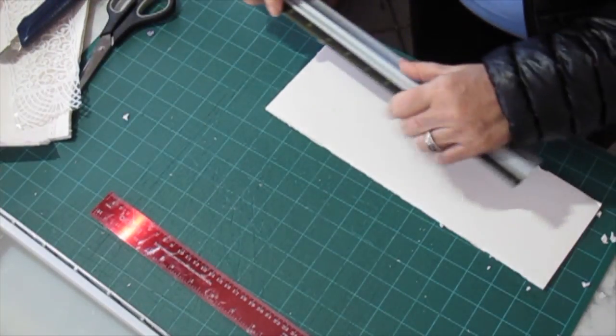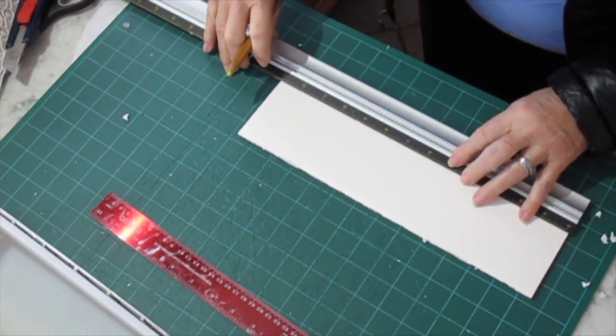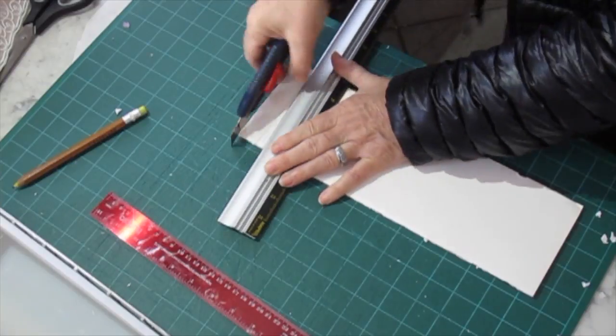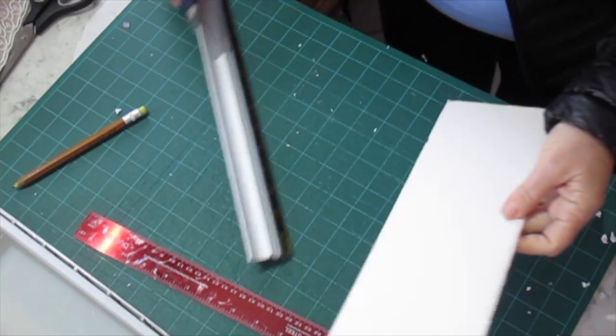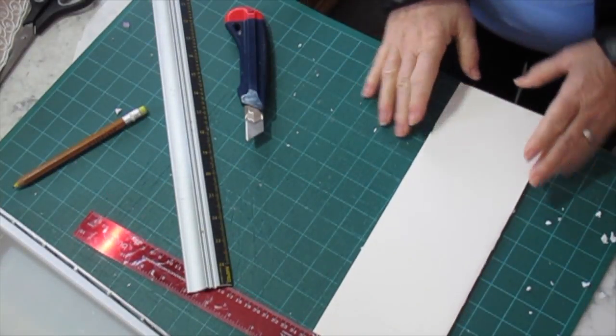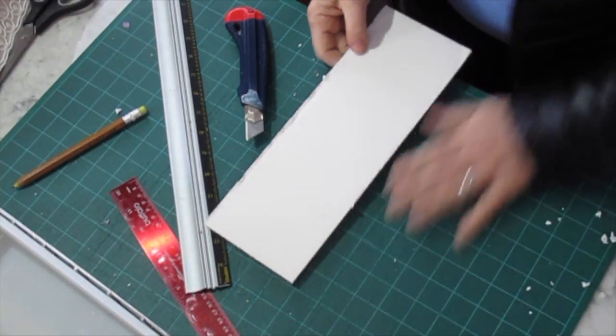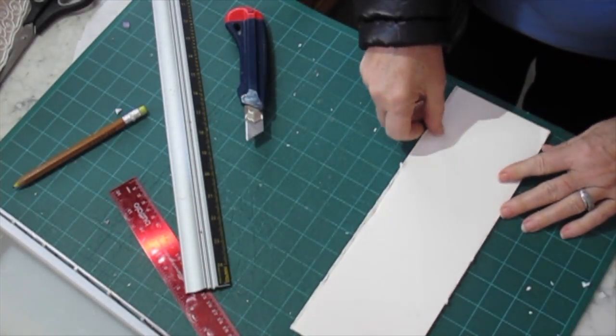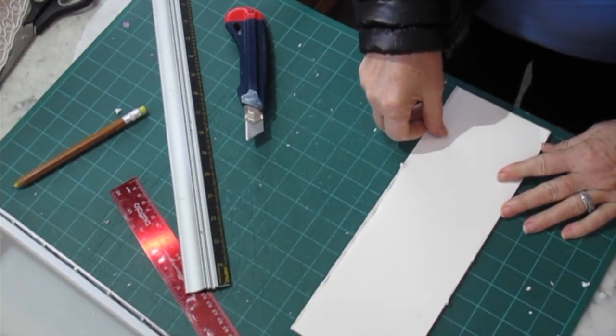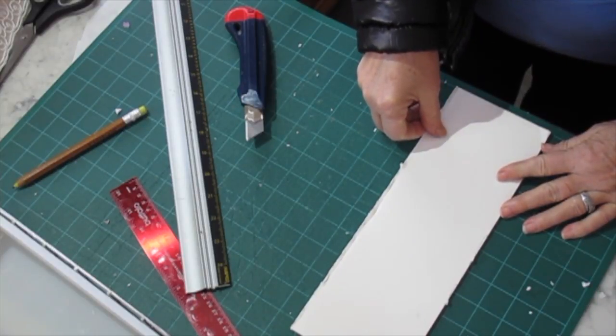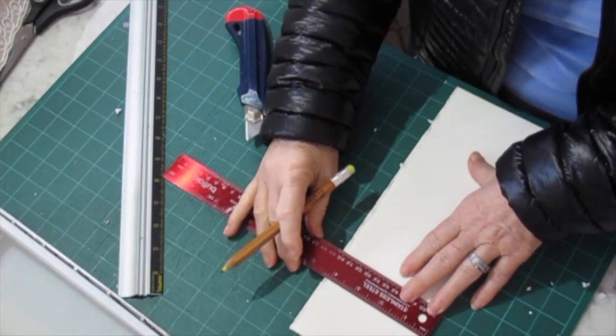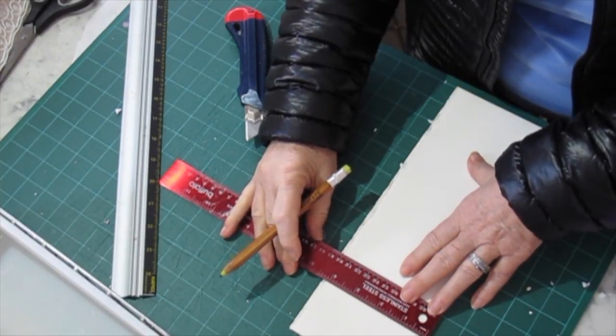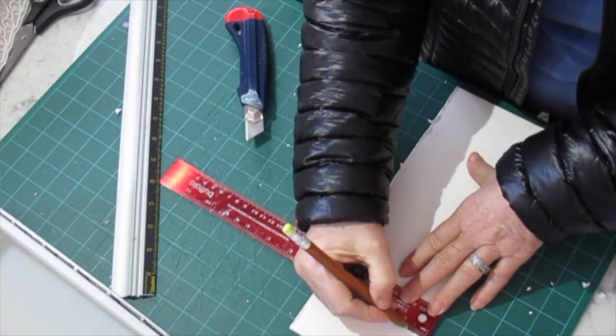So, to make sure it is very, very square, I used the lines on my mat so it won't... Yeah, this is very square. Good. I will now draw 1 and 1⁄2 inch for the sides on each side.